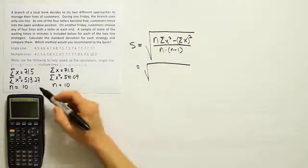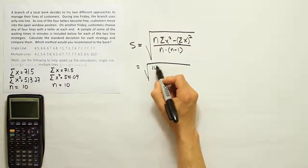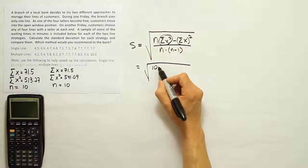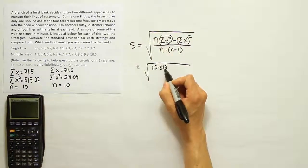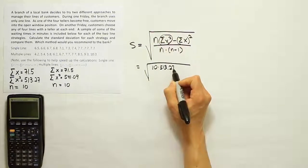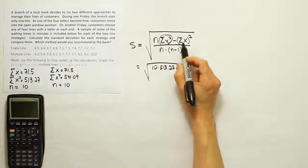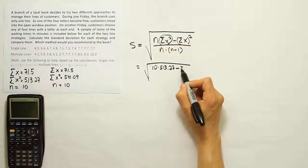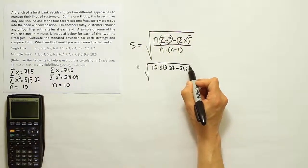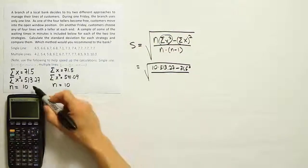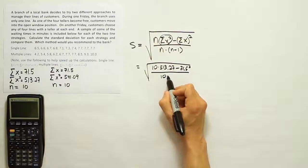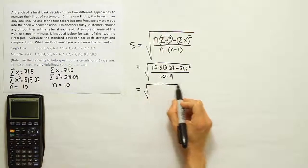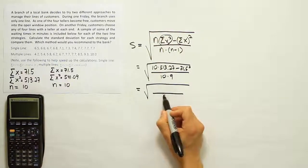All right, so let's plug in the data for this particular calculation. n here for the first group is 10. The summation of x squared, that's given to us as 513.27 minus the summation of x quantity squared. The summation of x is 71.5 and we'll square that. And then divide in the bottom by 10 times 9 or, of course, 90.